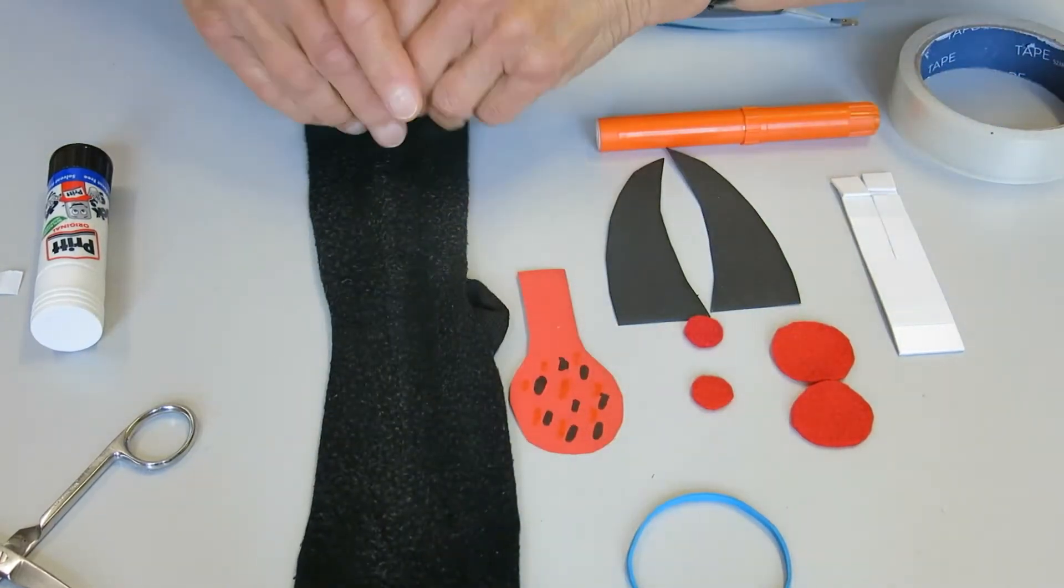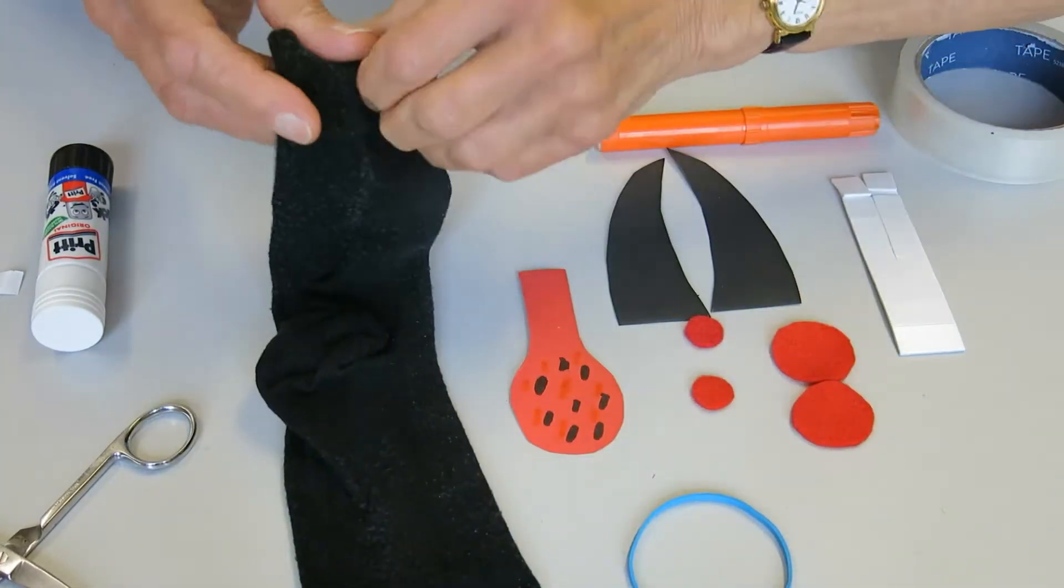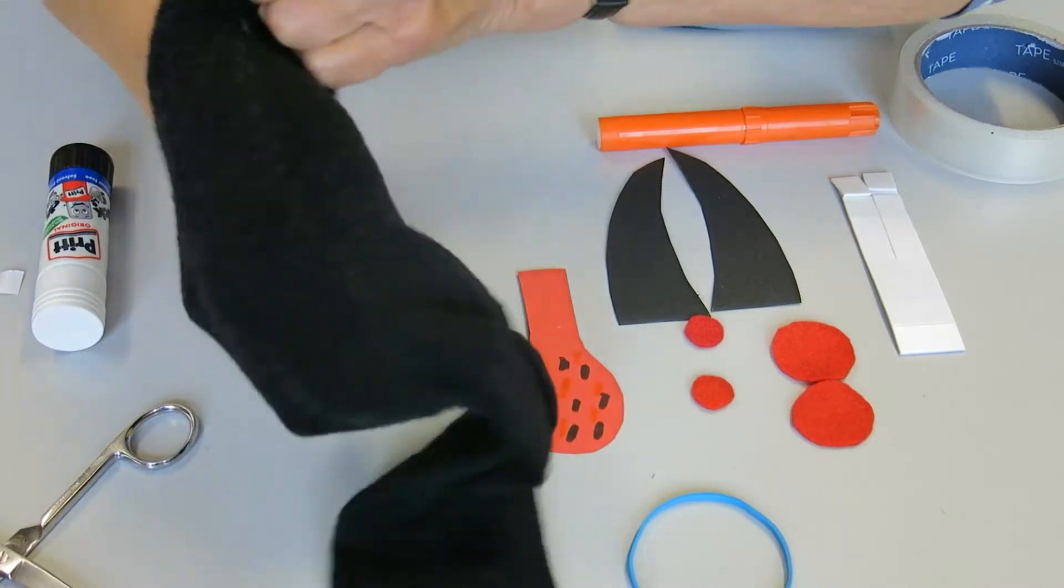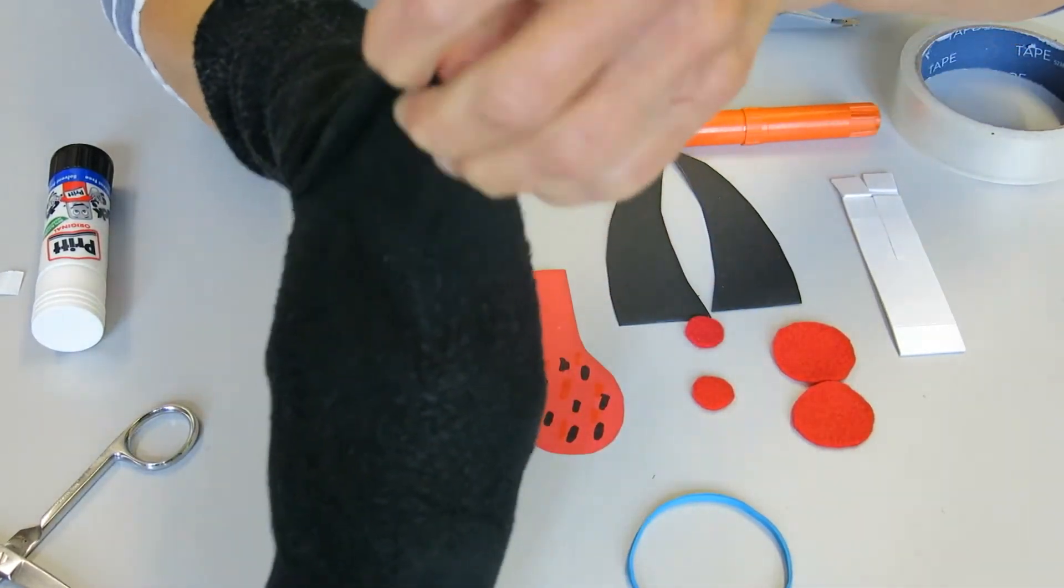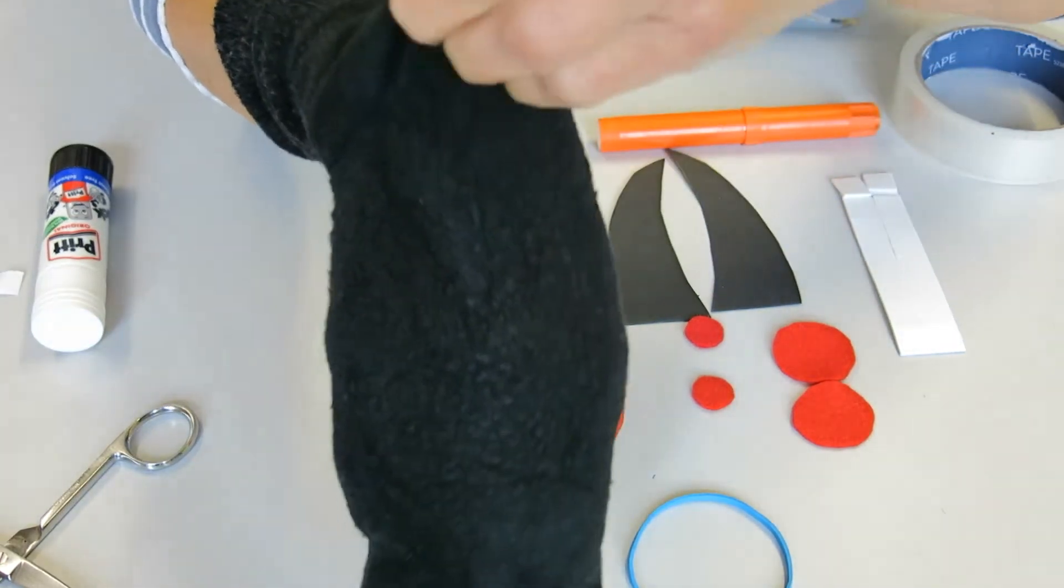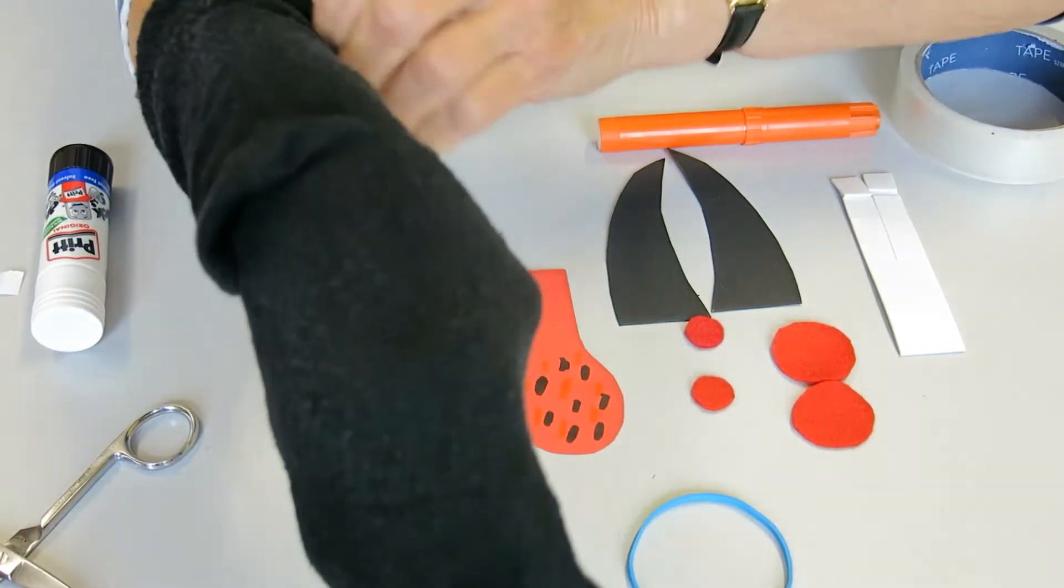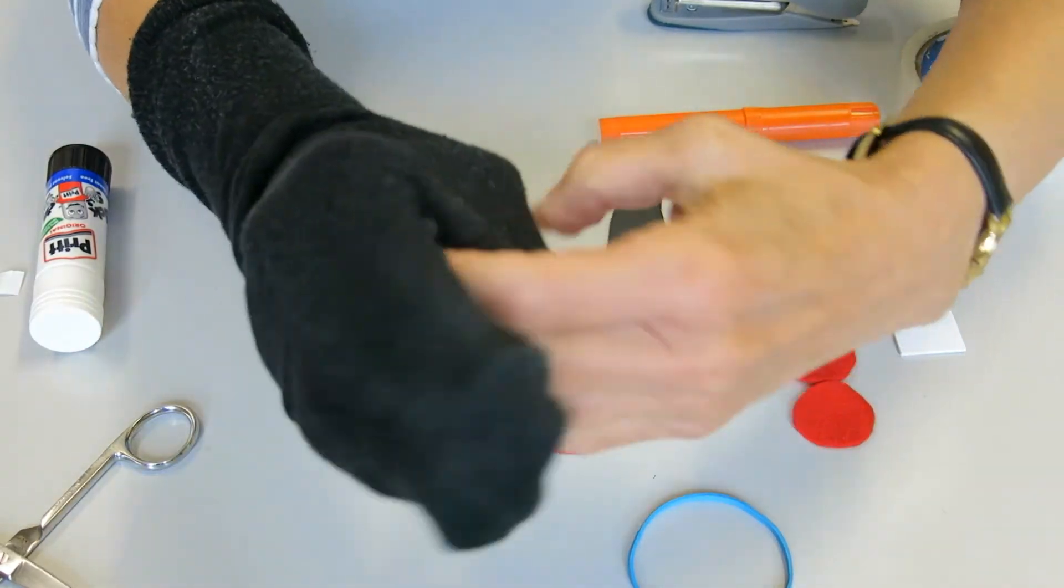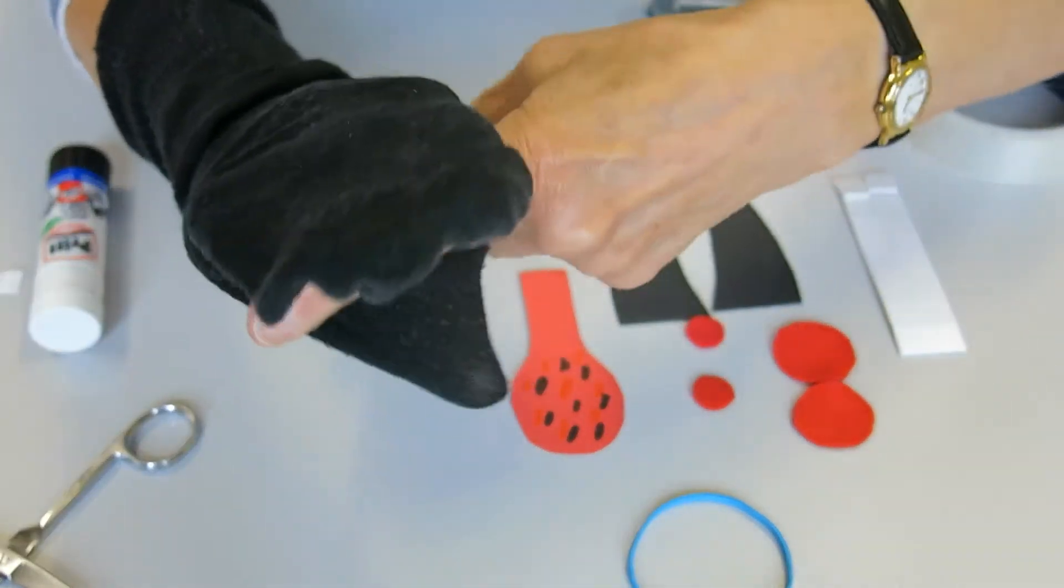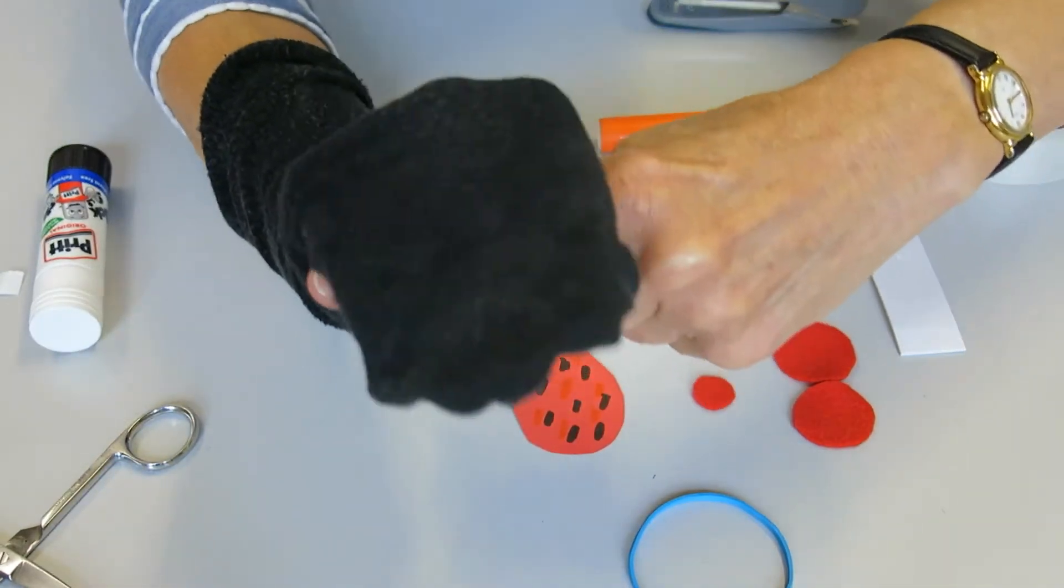Now we need to take our sock and you want to put your hand inside it so that the bit that's the heel is on the back of your wrist like that. And then just move your thumb so that you've got a mouth.